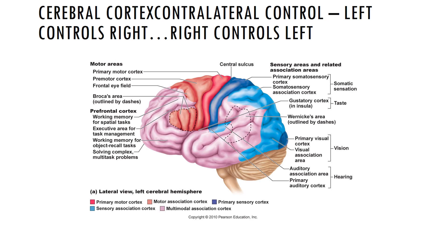The prefrontal cortex, also called the anterior association area, is involved with intellect, complex learning abilities, recall, and personality. This area is necessary for abstract ideas, judgment, reasoning, planning, concern for others, and your conscience. Tumors in this area frequently lead to personality disorders.